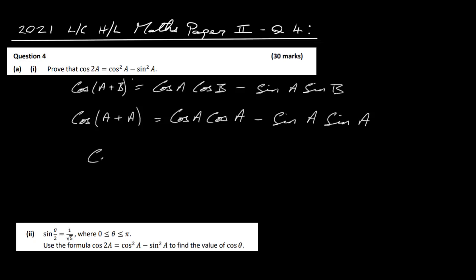Finally, then we have what we need here, cos 2a is equal to cos squared a minus sine squared a. And that's it, very straightforward.